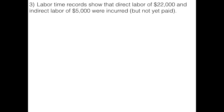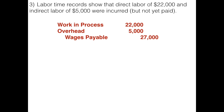We also have to remember that the direct portion of labor goes directly into work in process with a debit, and the indirect portion moves into overhead with a debit to our overhead account. The process is to keep that cost flow map in mind — debiting work in process for direct costs and debiting overhead for indirect costs.